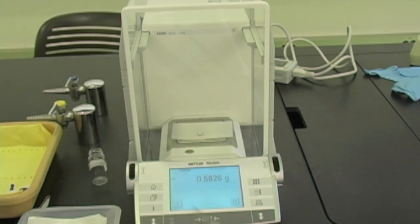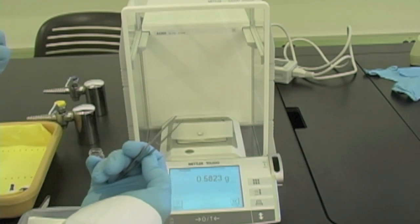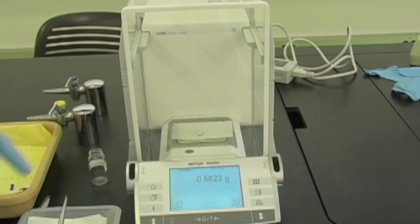I am going to wait for this circle right here. When you see that circle, it means that the balance is unstable. You have to wait until that circle is gone in order to record your reading because that circle indicates that the balance is unstable. It is still trying to stabilize. Now I can read the mass of this particular slug as 0.5823 grams.